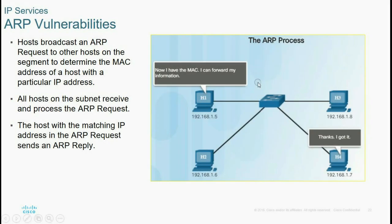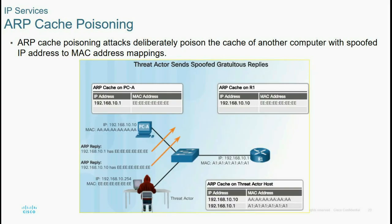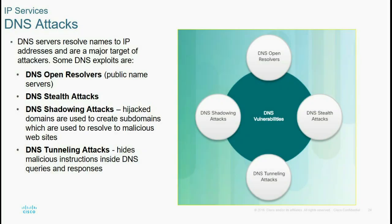ARP vulnerability: a host produces an ARP request to another host on the subnet to determine the MAC address of a host with a particular IP. When a host receives an ARP request, it maps the IP address. ARP is vulnerable to being attacked or exploited by remote hackers. ARP cache poisoning attacks deliberately corrupt the cache of another computer with false IP-to-MAC address mappings.